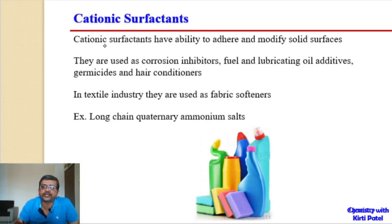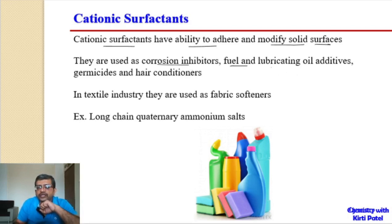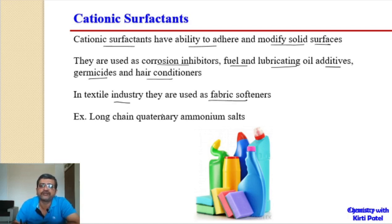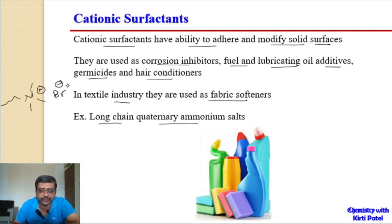Cationic surfactants have the ability to adhere to and modify solid surfaces, so they are used as corrosion inhibitors — forming a protective layer over metal surfaces. They are also used as additives in lubricants and fuels, as germicides, as hair conditioners, and as fabric softeners in textile industries. Long chain quaternary ammonium salts — bromide or chloride salts — are examples of cationic surfactants.